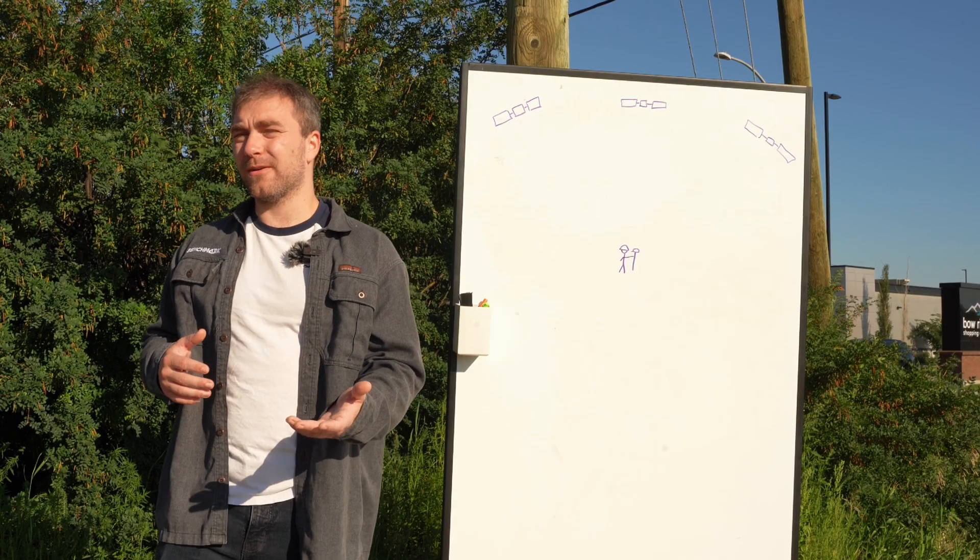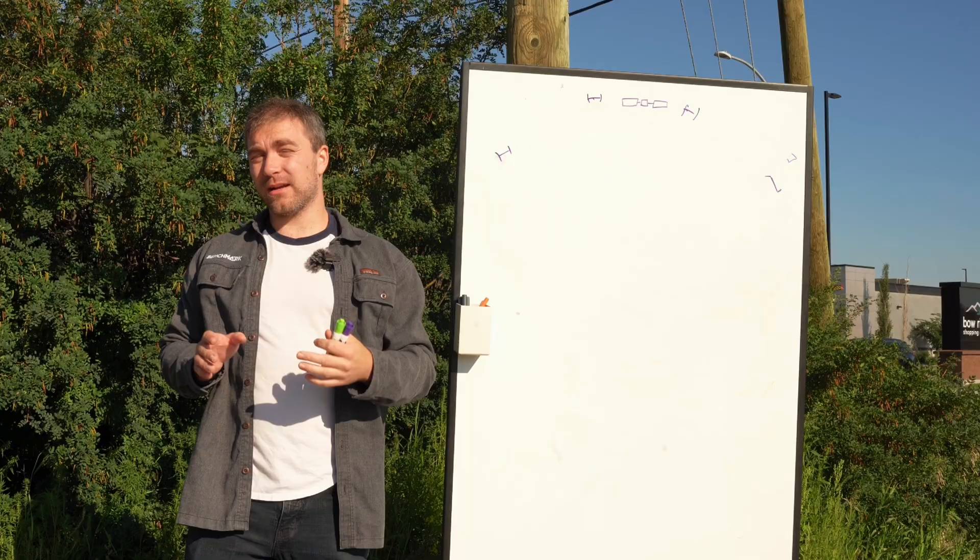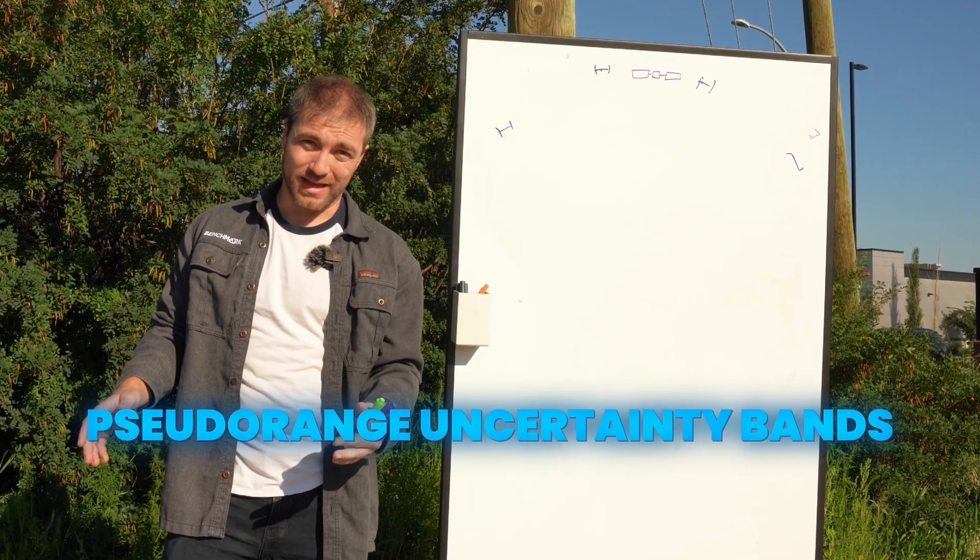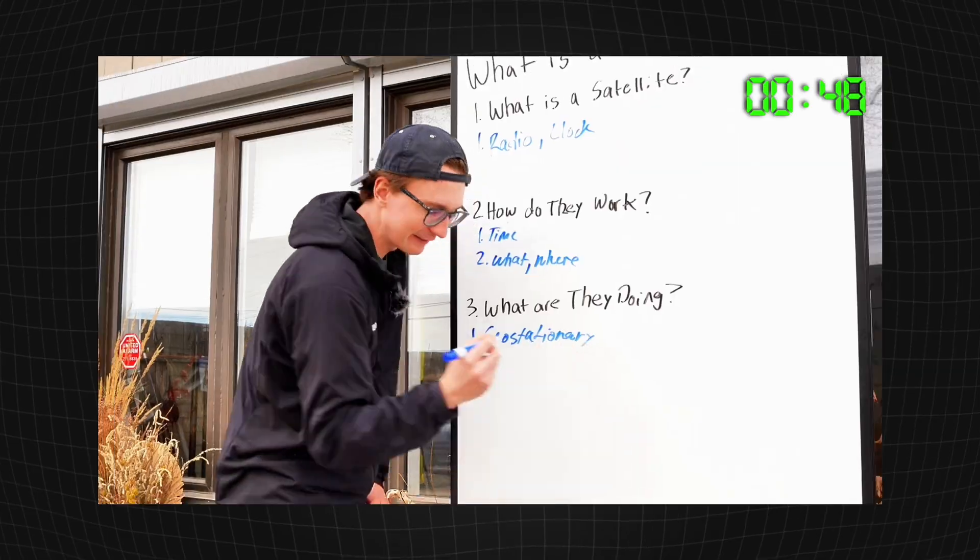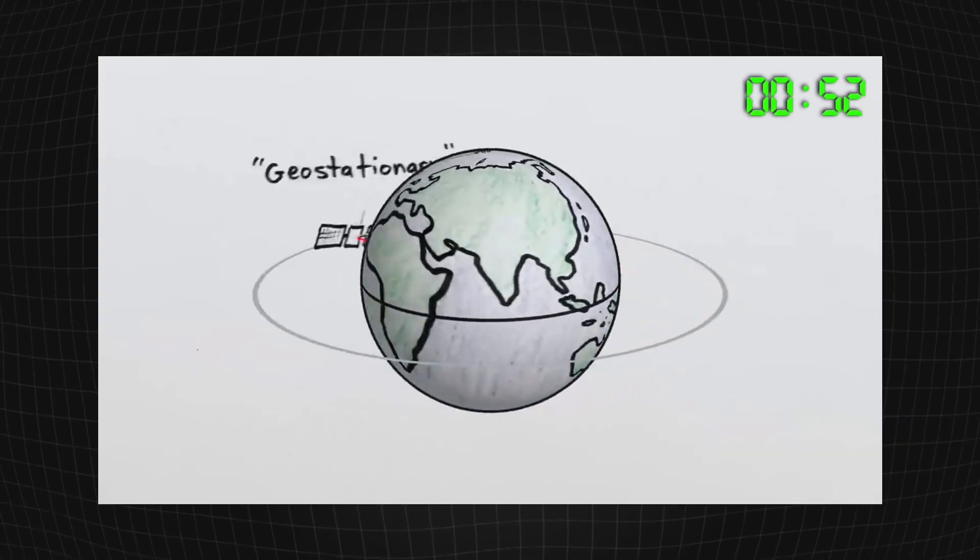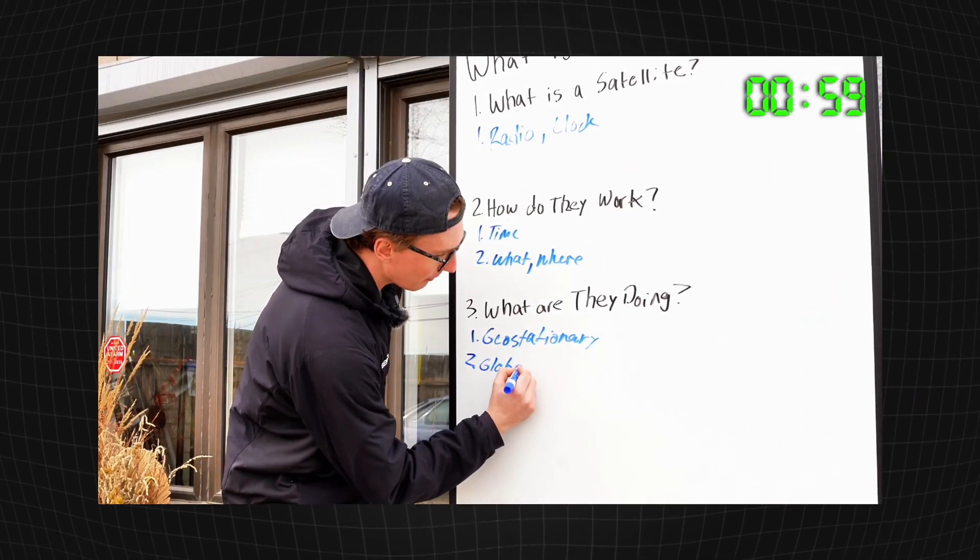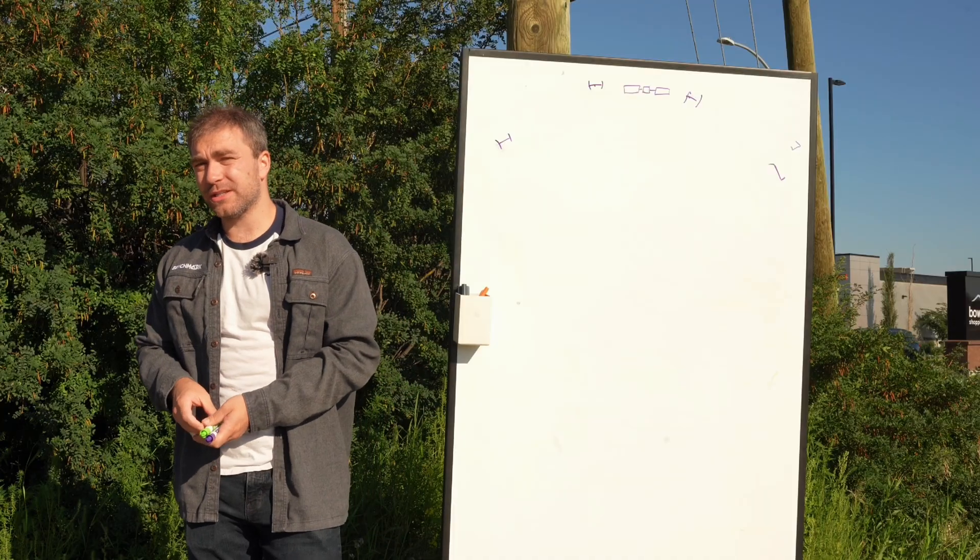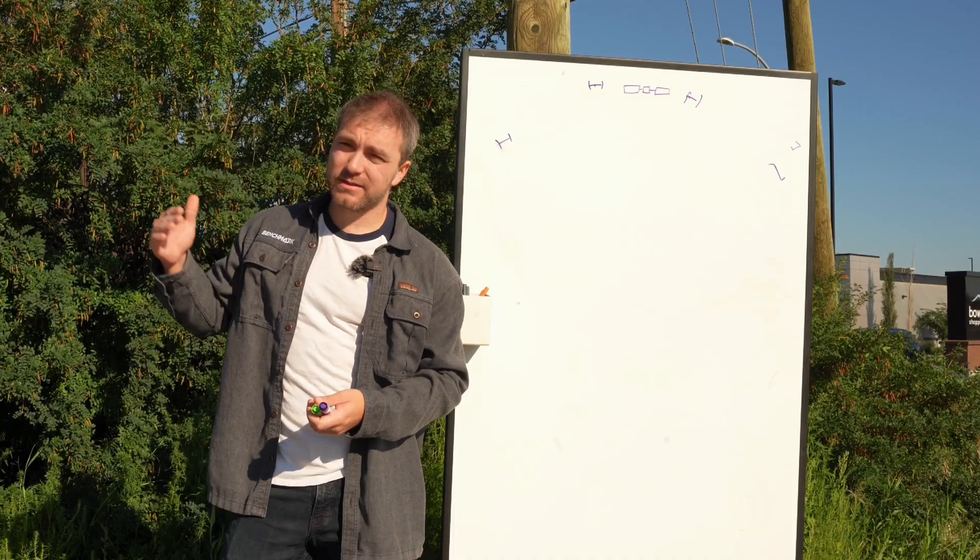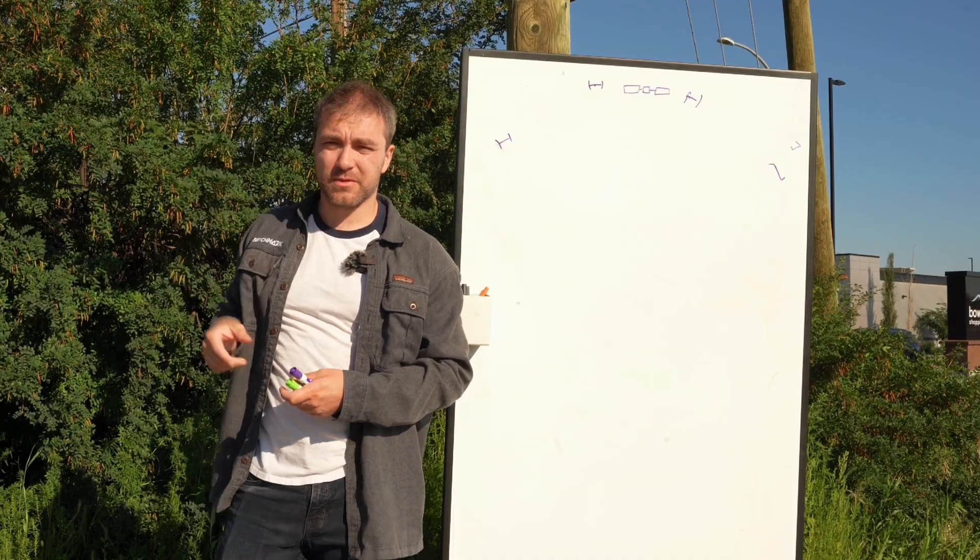But why do we care? Now to answer that we have to bring in a concept known as pseudorange uncertainty bands. Now when Nolan made his video about how satellites work and how they send signals down to you on earth and how you can then triangulate a position on the ground, what he didn't explain to you was that there's a little bit of uncertainty when signals come from those satellites.